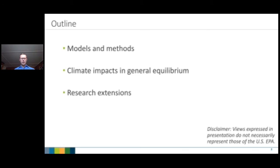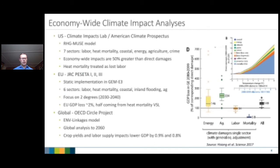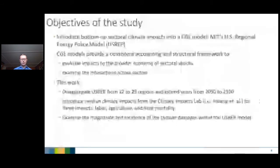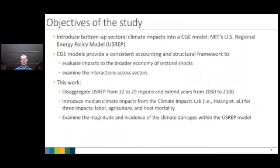A lot of groups have done this type of work. We are taking data from the Shang et al. paper processed by MIT and putting those impacts into the US-REP CGE model. The JRC and OECD have also been doing this work for a number of years. The objective is to introduce three types of damages into US-REP: the rationale is that we have many sectoral climate impacts and want to understand broader economic interactions while providing a consistent accounting basis for weighing relative effects across sectors.